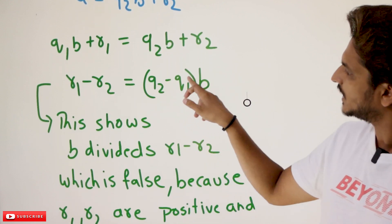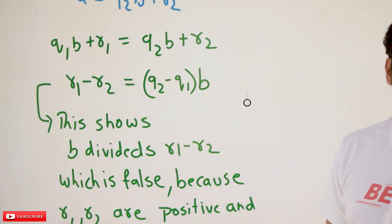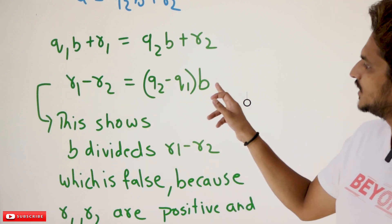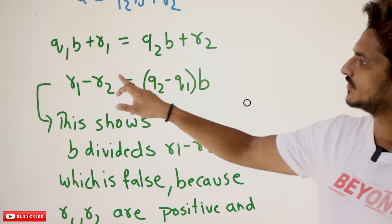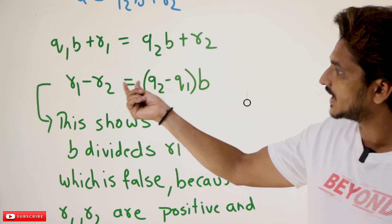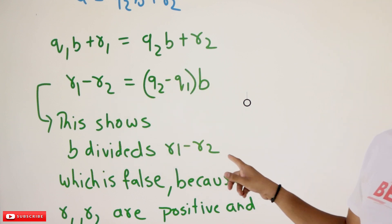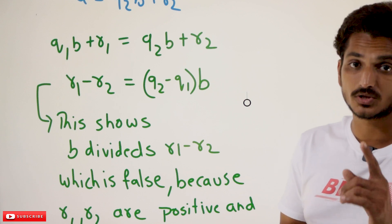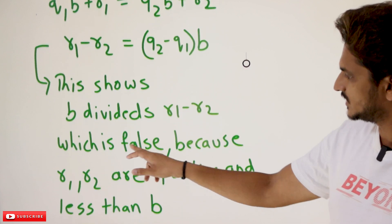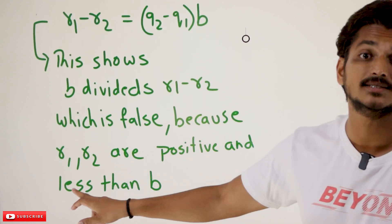So from this statement, we can say that B multiplied by some integer equals R1 minus R2. This shows that B divides R1 minus R2, which is not possible. Because both R1 and R2 are, which is false, because R1 and R2 are positive integers that are less than B.